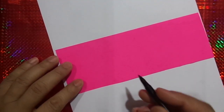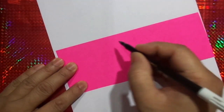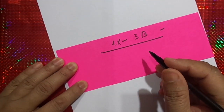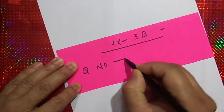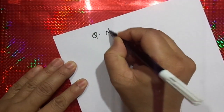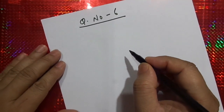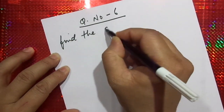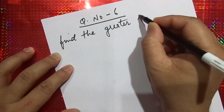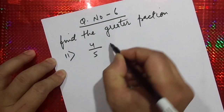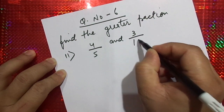We are heading towards the end of exercise 3b and shall be starting from question number 6 onwards till the end of this exercise. In question number 6, they are asking us to find the greater fraction. Two fractions have been given: 4 by 5 and 3 by 10, and they are asking which one of them is greater.